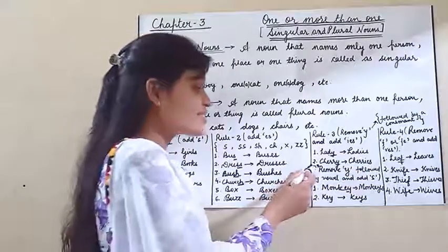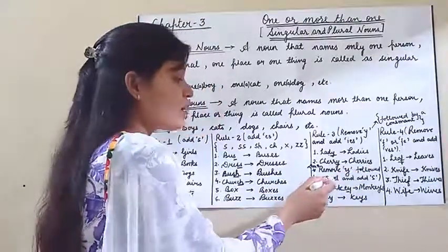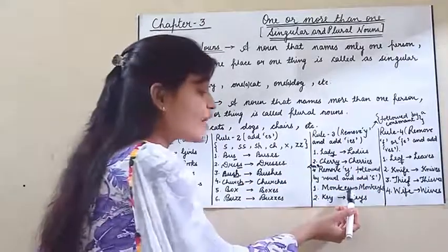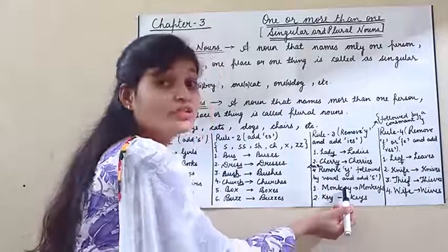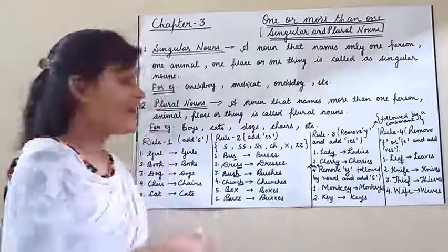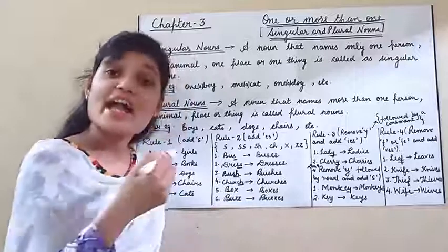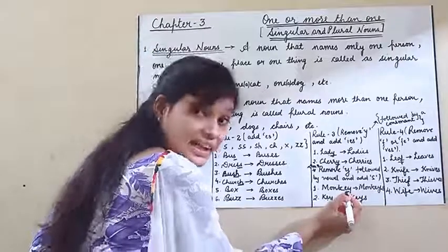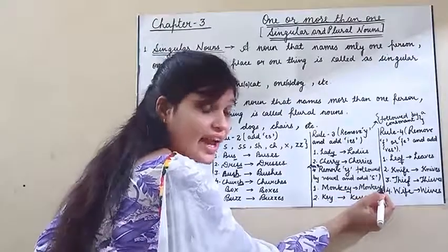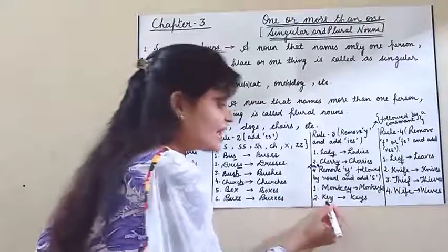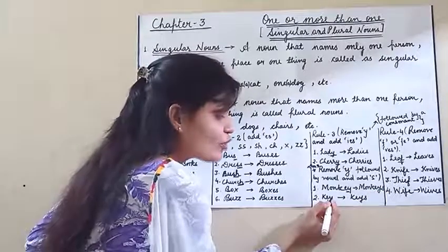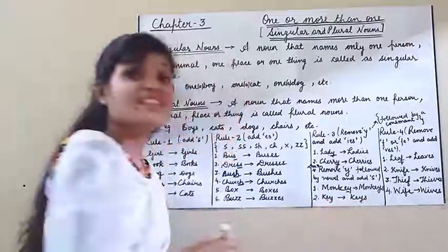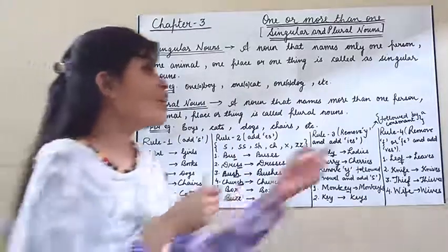The second part of this rule: Don't remove Y when followed by a vowel — just add S. अगर Y के पहले vowel आ रहा है तो हम Y को remove नहीं करते, हम directly S add कर देते हैं. For example: 'monkey' — before Y is E (a vowel), so we add only S — 'monkeys.' 'Key' — before Y is E, so we add S — 'keys.'